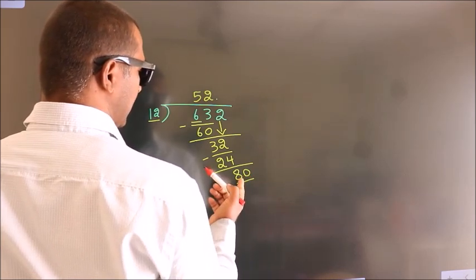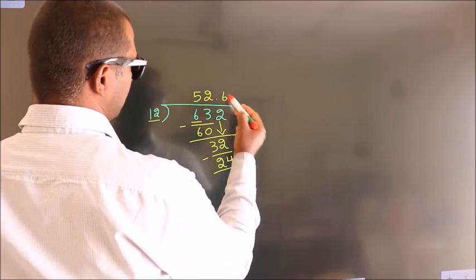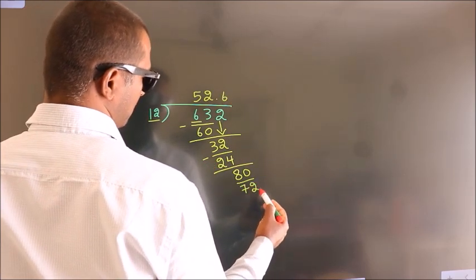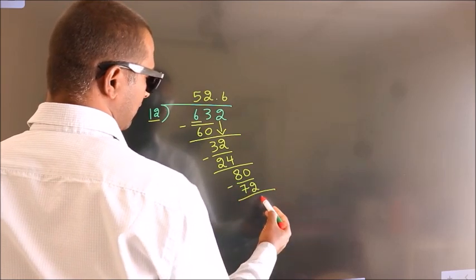A number close to 80 in 12 table is 12, 6, 72. Now we subtract, we get 8.